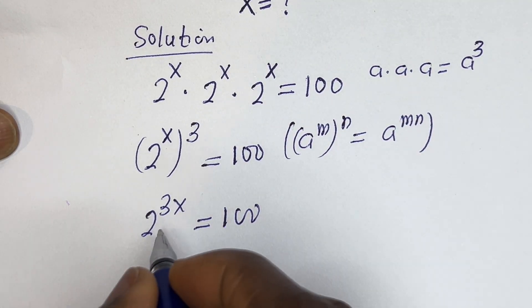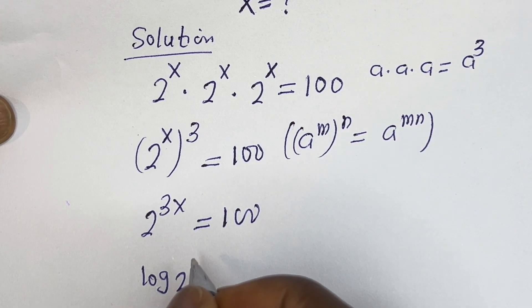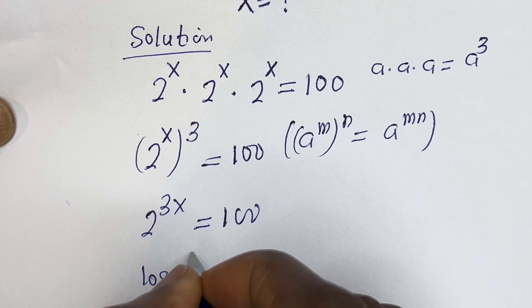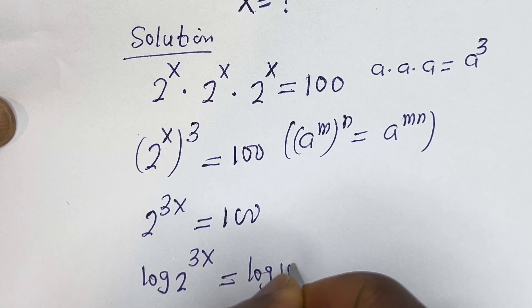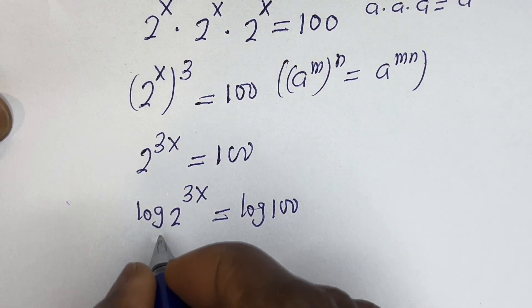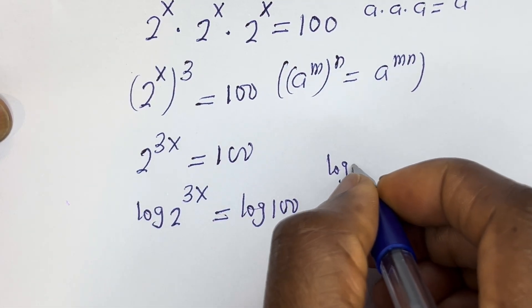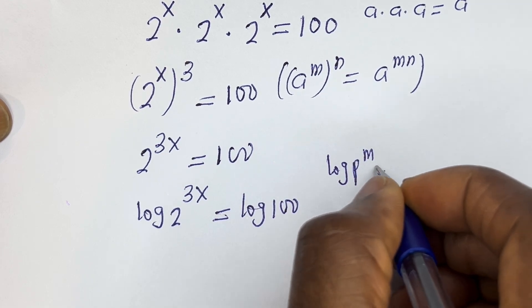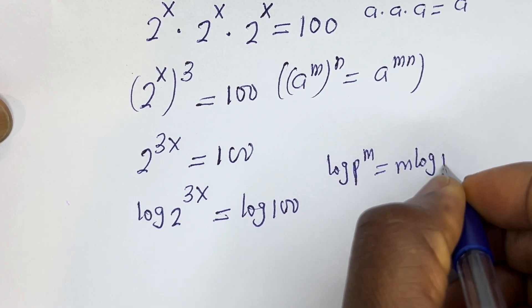Then let's take the log of both sides. We have log of 2 to the power of 3x is equal to log 100. Now if you have log p to the power of m, this is equal to m·log p.